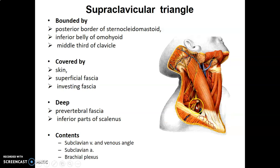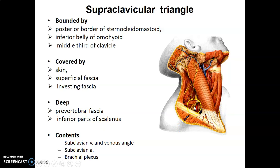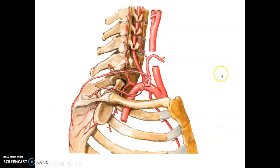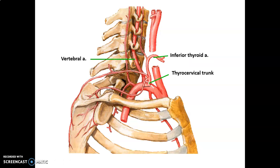The contents of the supraclavicular triangle include the subclavian vein, subclavian artery, and the brachial plexus. The subclavian vein and artery are separated by the scalenus anterior at the level of the scalene tubercle around the superior surface of the first rib. The subclavian vein is anterior, followed by the scalenus anterior muscle, then posterior to it is the subclavian artery. On the right, the subclavian artery comes from the brachiocephalic trunk; on the left, it comes directly from the arch of the aorta.